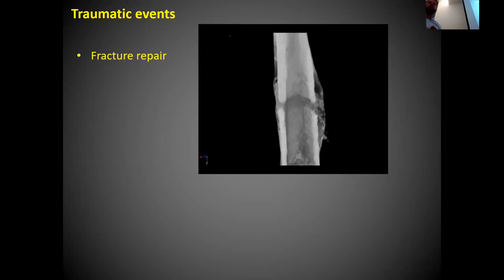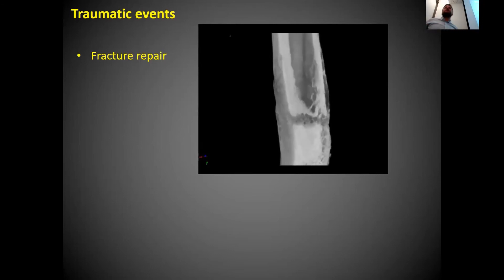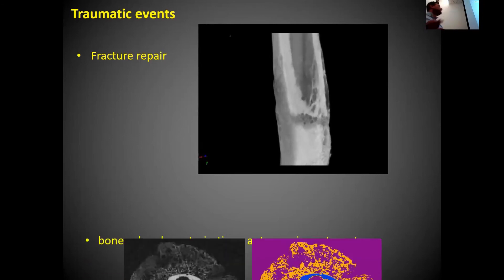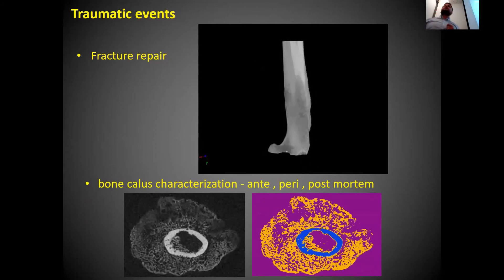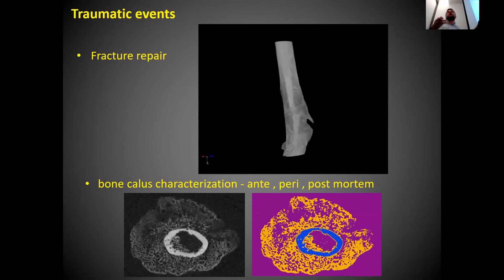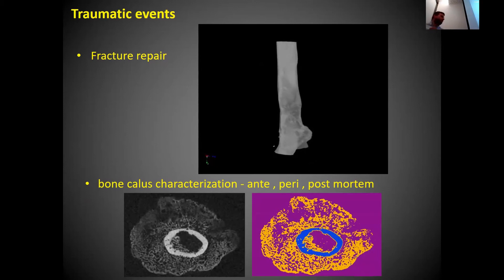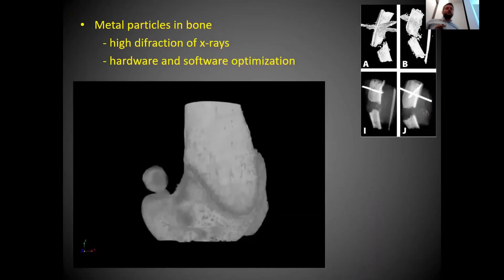For traumatic events, fracture repair can be very well seen and visualized. You can characterize the bone callus and determine whether a fracture occurred ante-mortem, peri-mortem, or post-mortem — this can be done quite reliably.